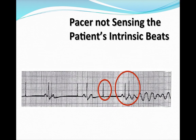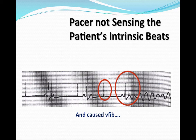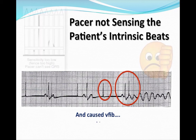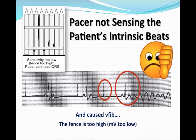In this picture, you see a pacemaker spike, a normal beat, a pacemaker spike, a normal beat, and then a pacemaker spike that lands on a T wave — unfortunately leading to V-fib in this patient. That is definitely not good. The fence was way too high and the pacemaker didn't see what was going on and just fired away.